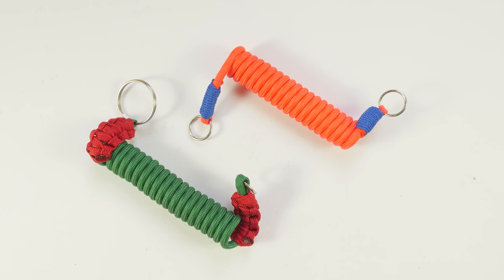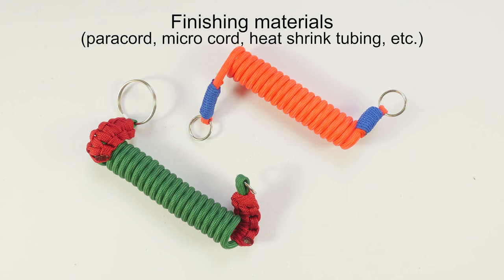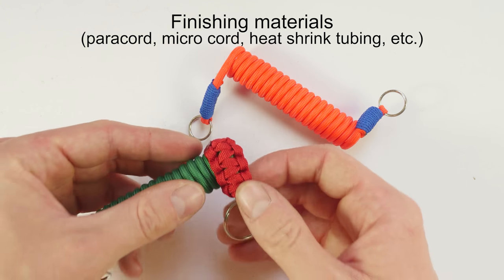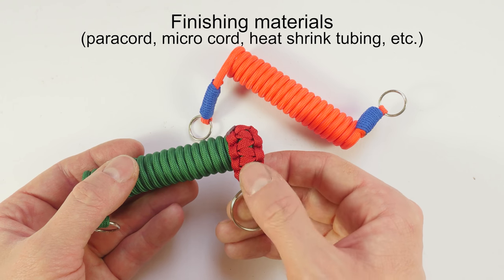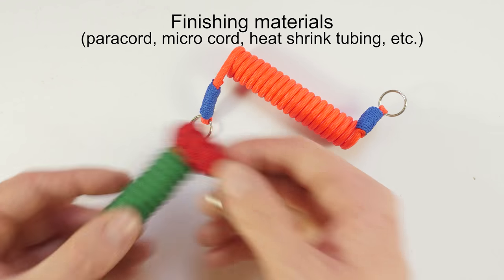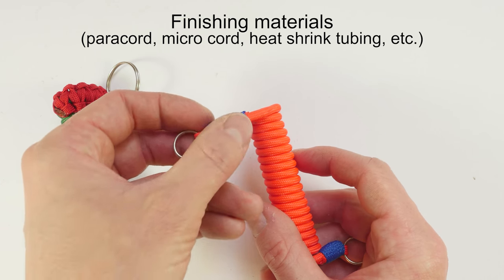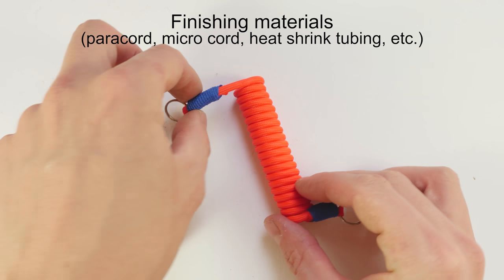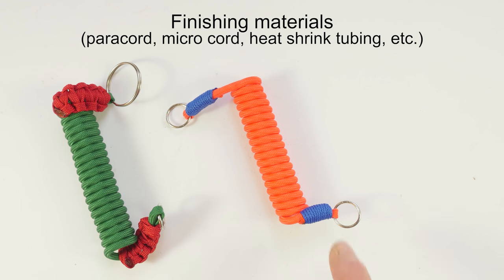Another supply that you're going to need is going to be something to finish the ends of your lanyard. For example, here I used two pieces of 550 paracord, which I gutted and used to secure the ends of the lanyard. Here I used microcord to do a common whipping on both sides. You could also use a variety of other techniques to finish. You could also use heat shrink tubing, which is used for work with electricity.